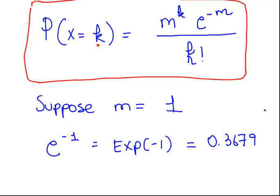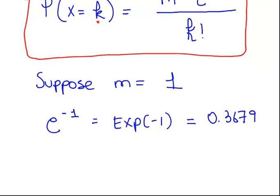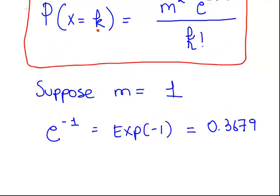Suppose M is equal to 1. We're going to calculate the probability of X equal to 0, X equal to 1, and X equal to 2. So with M equal to 1, we need E to the power of minus 1. Check that you would get, to four decimal places, 0.3679. Just make sure you're able to calculate that on your calculator.